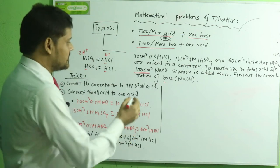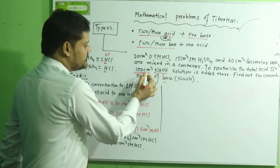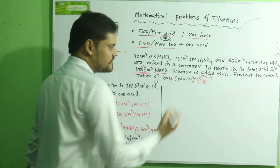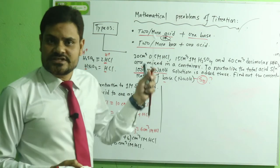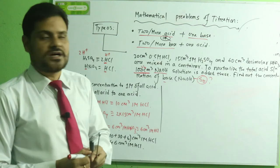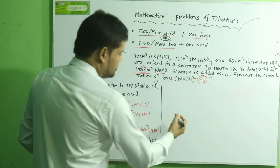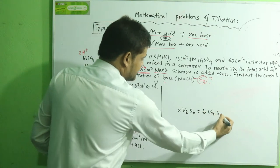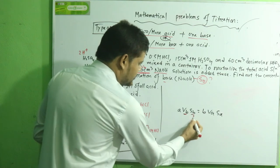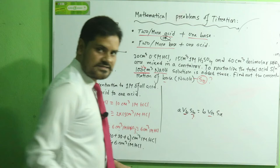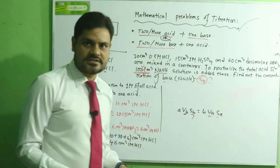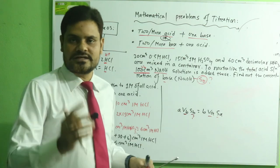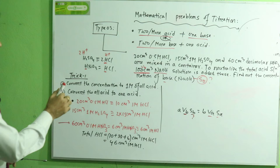The volume of sodium hydroxide Vb is given, and Sb is the required value. In the volumetric equation, we need the total volume and total concentration of the acids. However, three different acids are present. There are two tricks to solve this problem. Trick one: convert the concentration of all acids to one equivalent molar concentration. Trick two: convert all acids to one equivalent acid — for example, convert H₂SO₄ and HNO₃ to HCl equivalents.